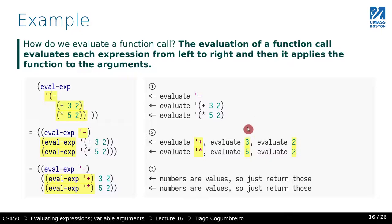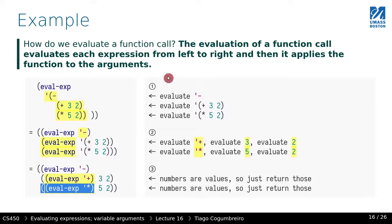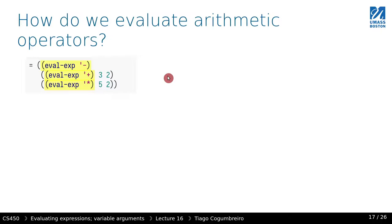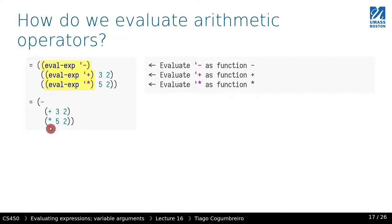Assuming eval of minus returns a function, it's equivalent to calling the function returned by evaluating minus, with arguments from evaluating plus and star similarly. So we need to evaluate the symbol minus as function minus, the symbol plus as function plus, and the symbol times as function times. This requires a mapping from symbol to function, so that when we encounter a symbol, we replace it with its corresponding function.